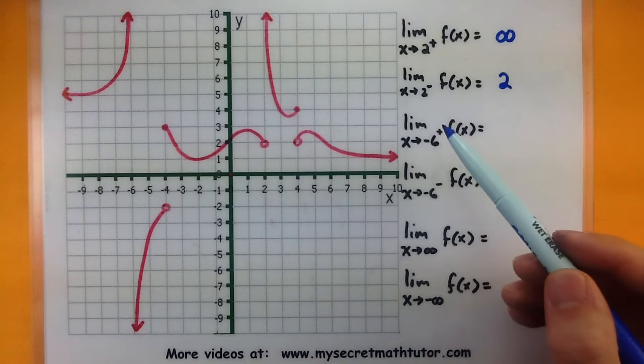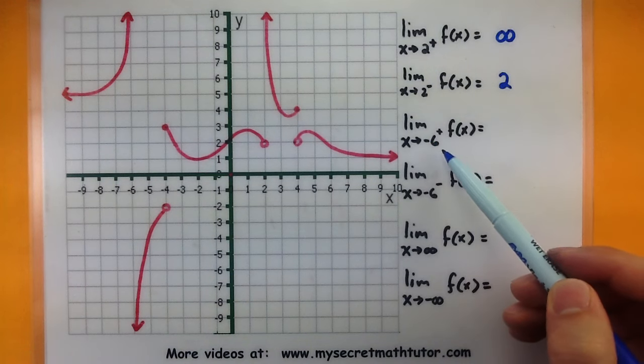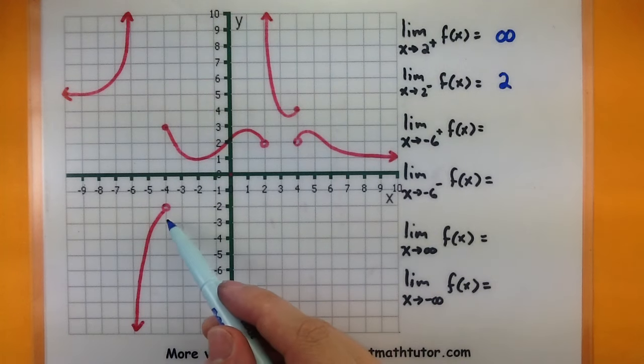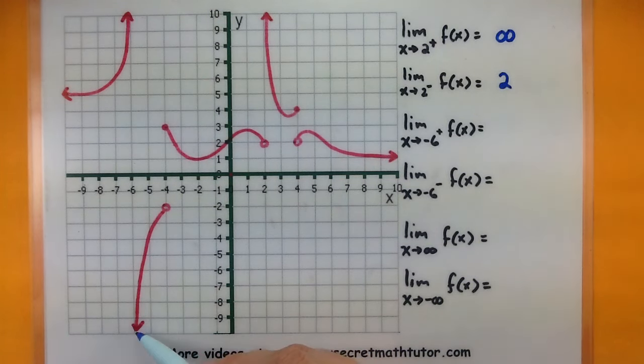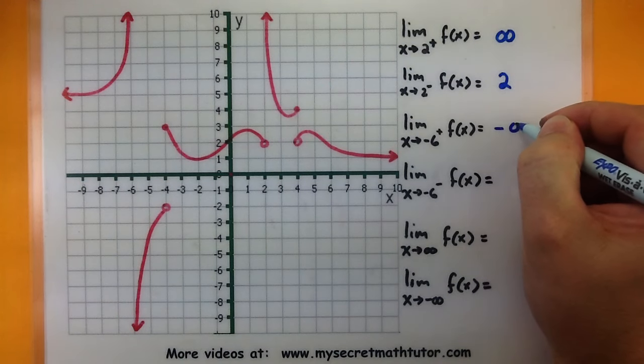Let's do some more. This next one says the limit as x approaches -6 from the right side. Here's our -6. We're approaching from the right side. And now we can see that our function is getting large but negative. So this one is going towards negative infinity.